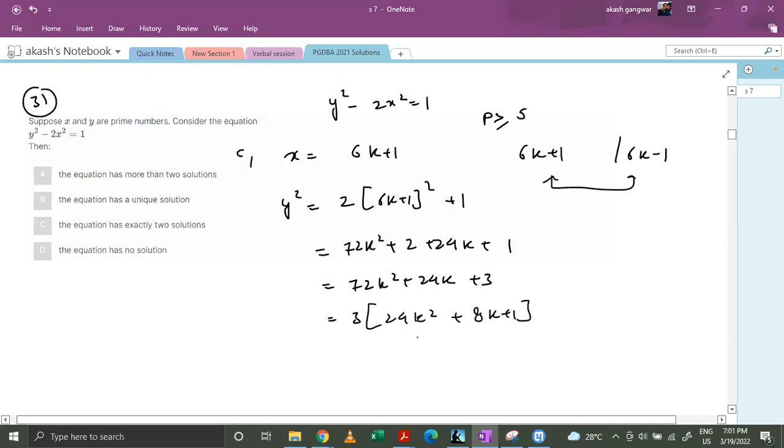You can clearly see that we cannot represent this one in either 6k plus 1 or 6k minus 1 form. So that's why we can clearly tell that this particular case is not fine.